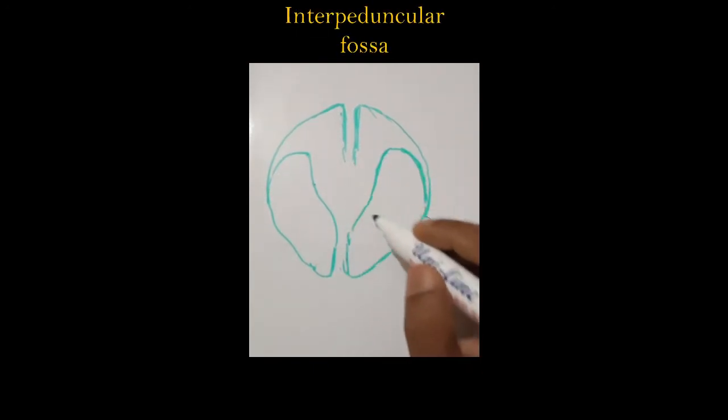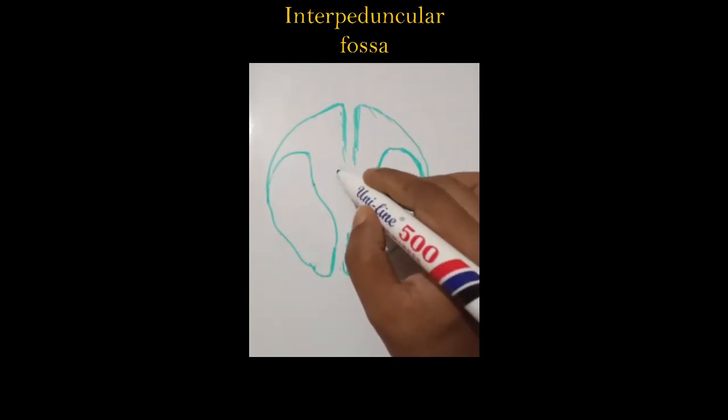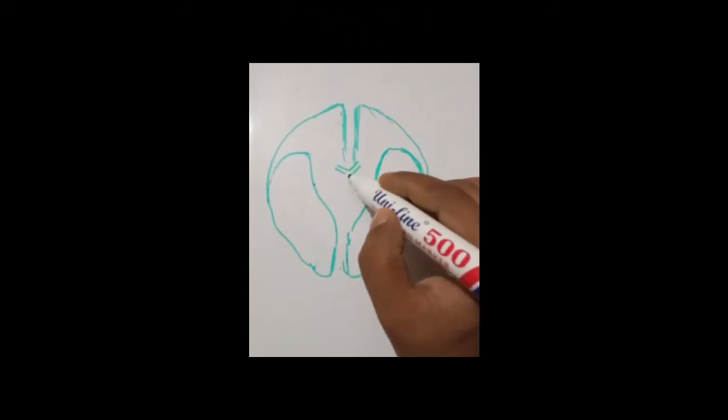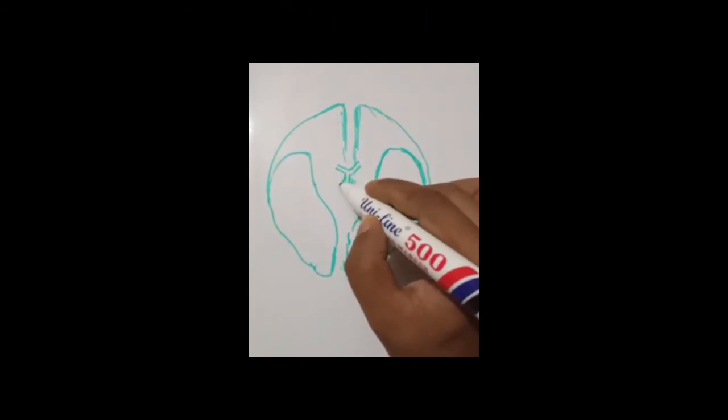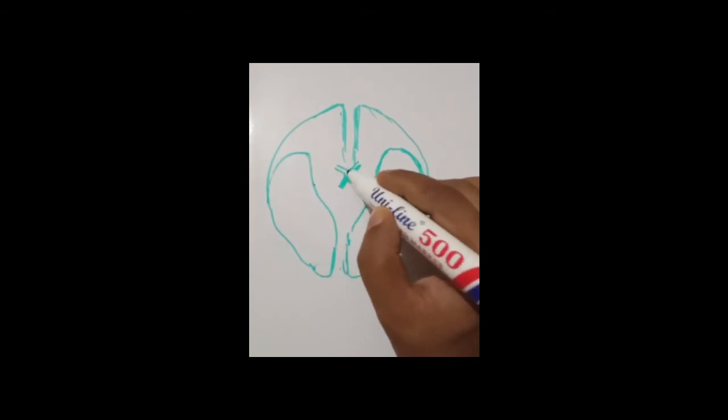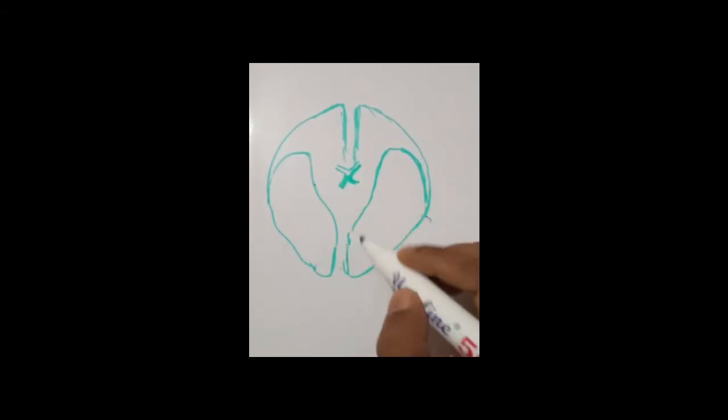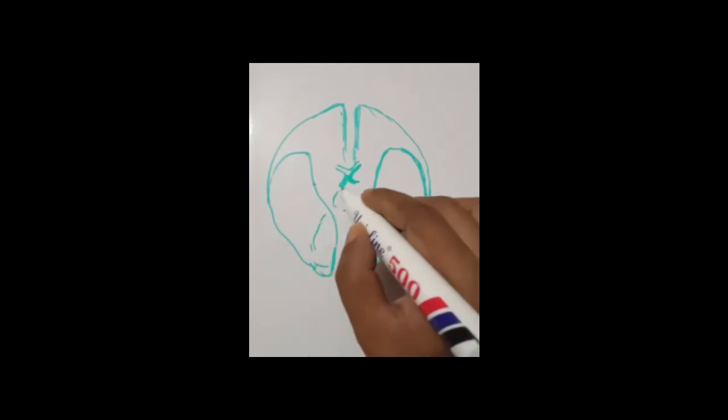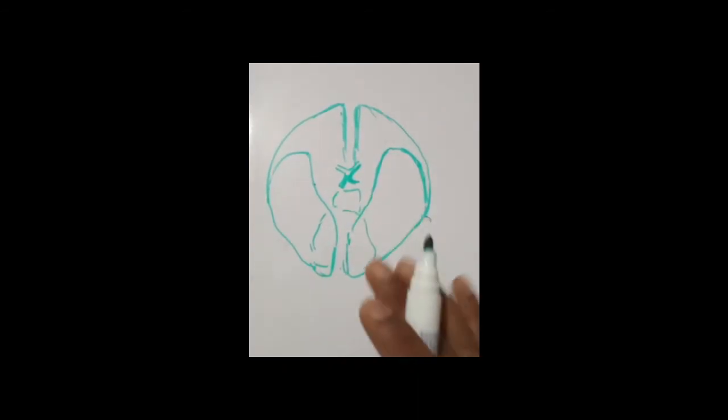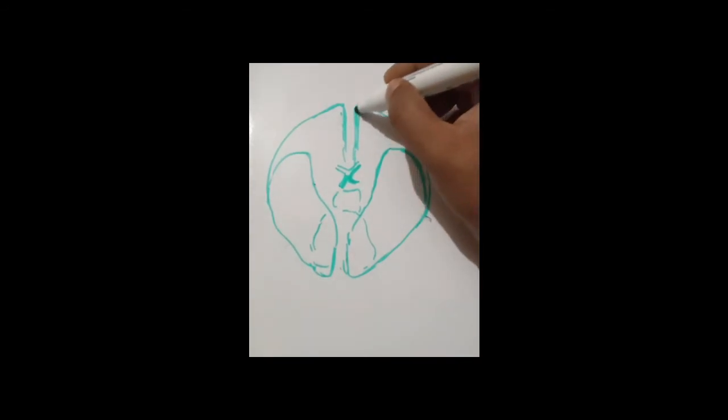This area is for the interpeduncular fossa. Actually here is the optic chiasma and this area is for the cerebellum. Here pons will be situated and so many structures will be situated here, but we will deal about the inferior surface of the frontal area at the orbital surface.